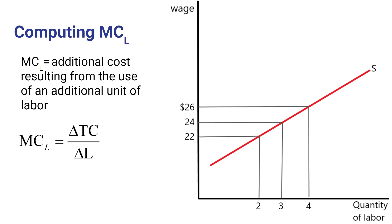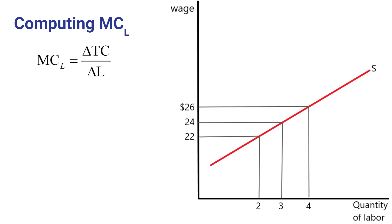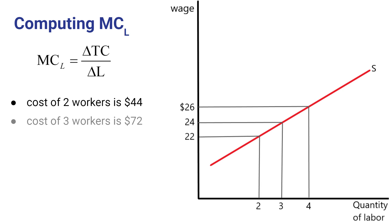To measure the marginal cost of labor, we have to compute the change in total cost divided by the change in labor use. When two workers are hired, the total cost of these two workers would be $44. If the firm hires three workers, the cost would be 3 times $24, or $72. If the firm hires four workers, the cost of the labor would be 4 times $26, or $104.